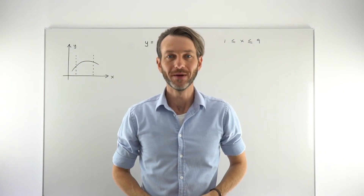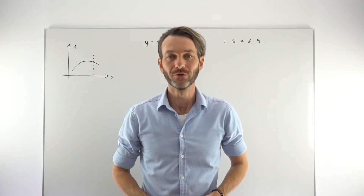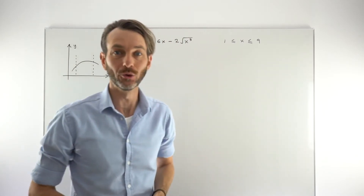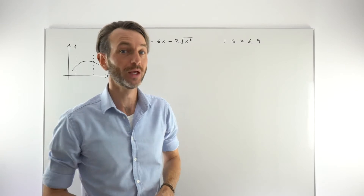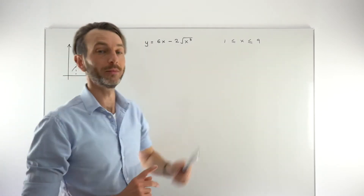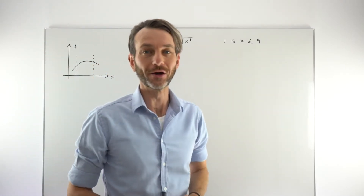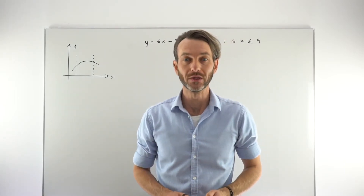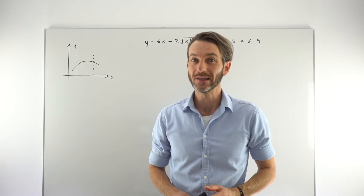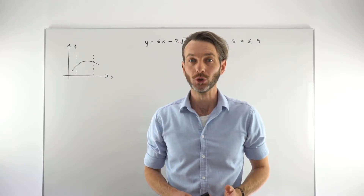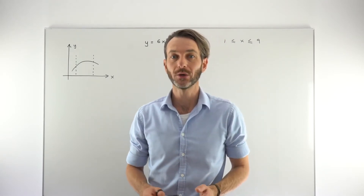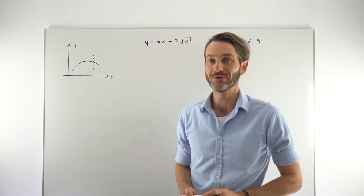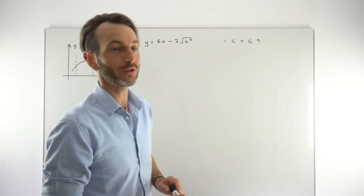In this video, we're going to look at finding maximum and minimum values of a function on a closed interval, or sometimes this is called finding the local extrema of the function. We're going to work an example problem in a moment, but before we get there, I want to make sure we're really clear on what it is we're actually trying to find. This technique tends to be quite poorly done by students, and I think it's because often they're not sure what exactly they're trying to find.